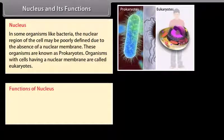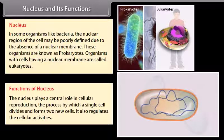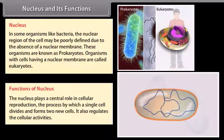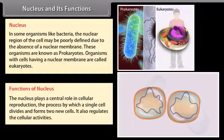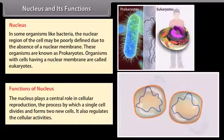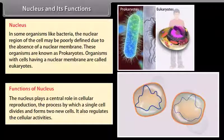The nucleus plays a central role in cellular reproduction — the process by which a single cell divides and forms two new cells. It also regulates cellular activities.